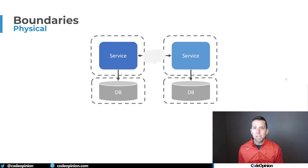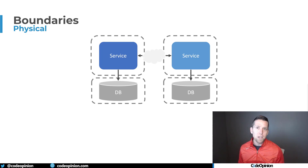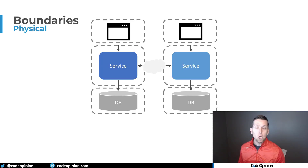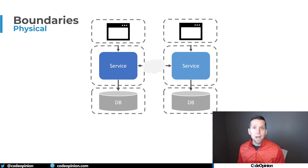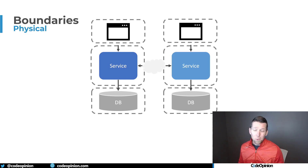But in reality, you actually have different physical boundaries, because your service likely has to communicate to your database over the network as well. So let's take this a step further and get closer to the real world, where we have a web app or SPA that is the front-end client interacting with our services. We have a physical boundary from the browser to our HTTP API, which is our service, and also to the database. And if we were doing RPC between services, we're also crossing that network — that physical boundary — there as well.